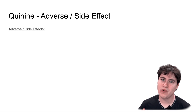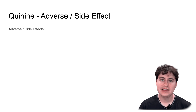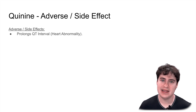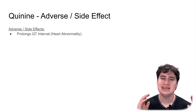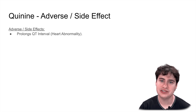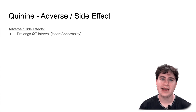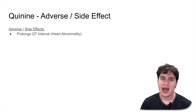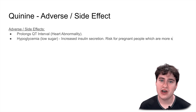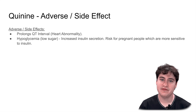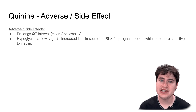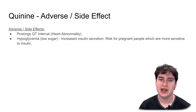Like with any drug, there are going to be adverse effects and side effects. The main one we're going to want to know — like many other anti-malarial drugs — is that quinine can cause QT interval prolongation. What is QT interval prolongation? It's an abnormality on an EKG, which monitors the electrical activity of the heart. This can be fatal if you have too long of an interval. Another very interesting effect this drug can cause is hypoglycemia, which means low blood sugar. This is very important in pregnant patients because they are more susceptible to having blood sugar abnormalities.